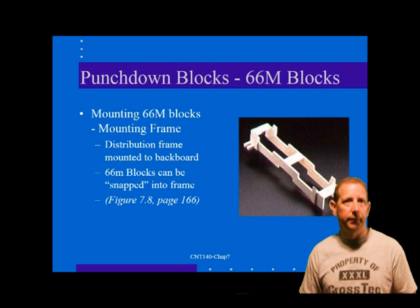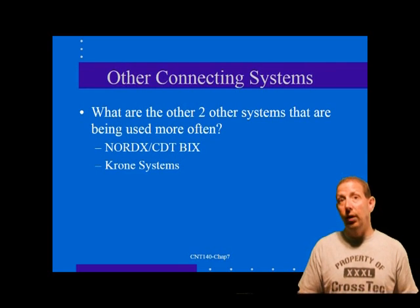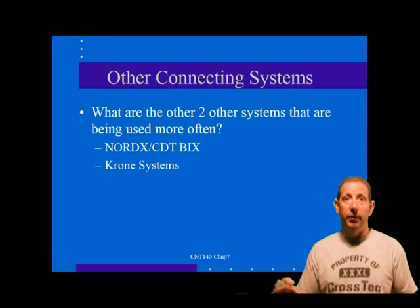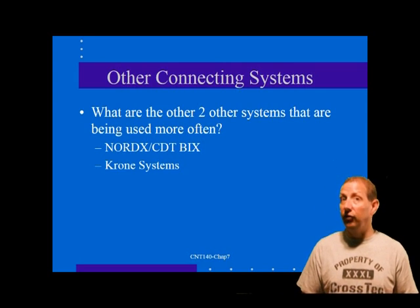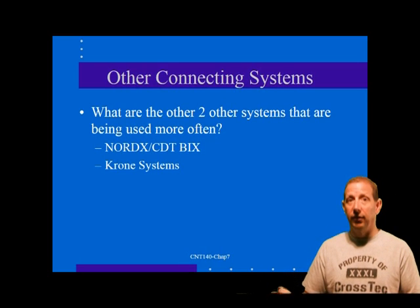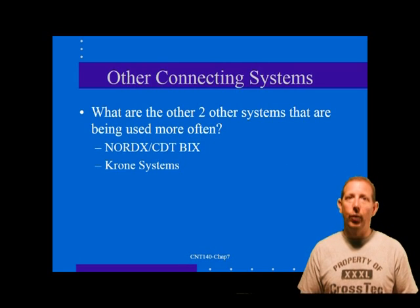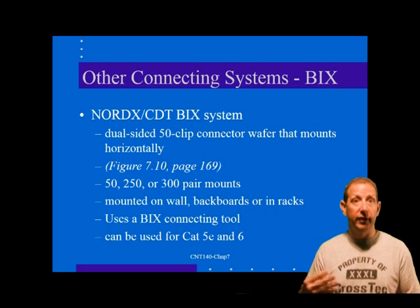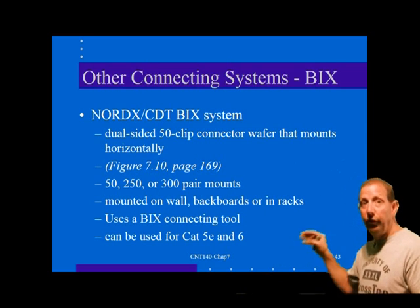Now we'll mention two other connecting systems that are beginning to be used in more and more installations. One is the Nordic CDT, formerly known as Nortel Northern Telecom, and the Bix system. The other is the Crona system. Both offer equivalent functionality to the 110 system and significant advantages over the older 66 system. The Nordic CDT Bix system is very similar in concept to the 110 system, with a dual-sided 50-clip connector wafer that mounts horizontally in a mounting frame. Unlike the 110 system, the station or feeder cables are punched down directly into the back edge contacts of the connector.